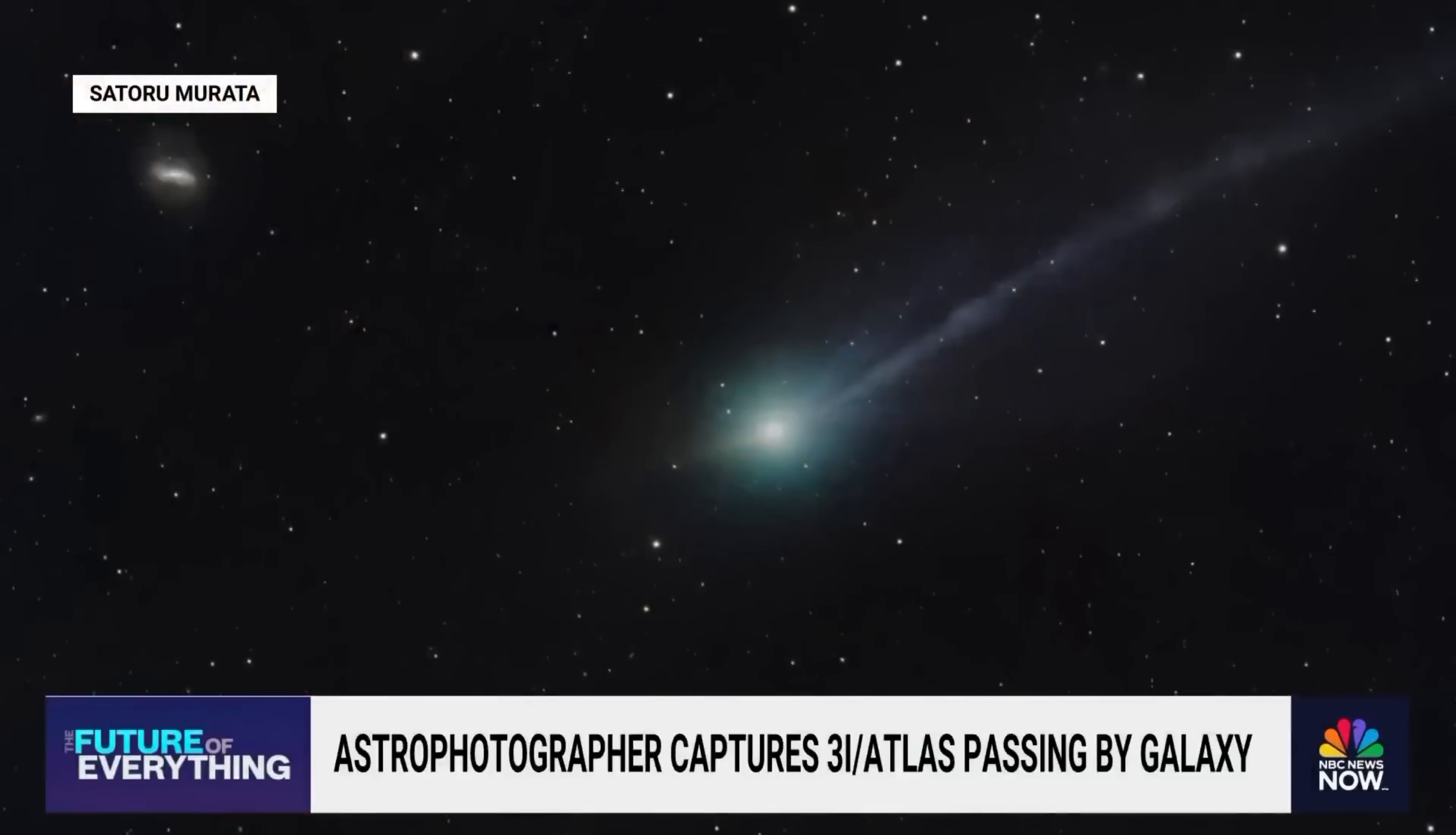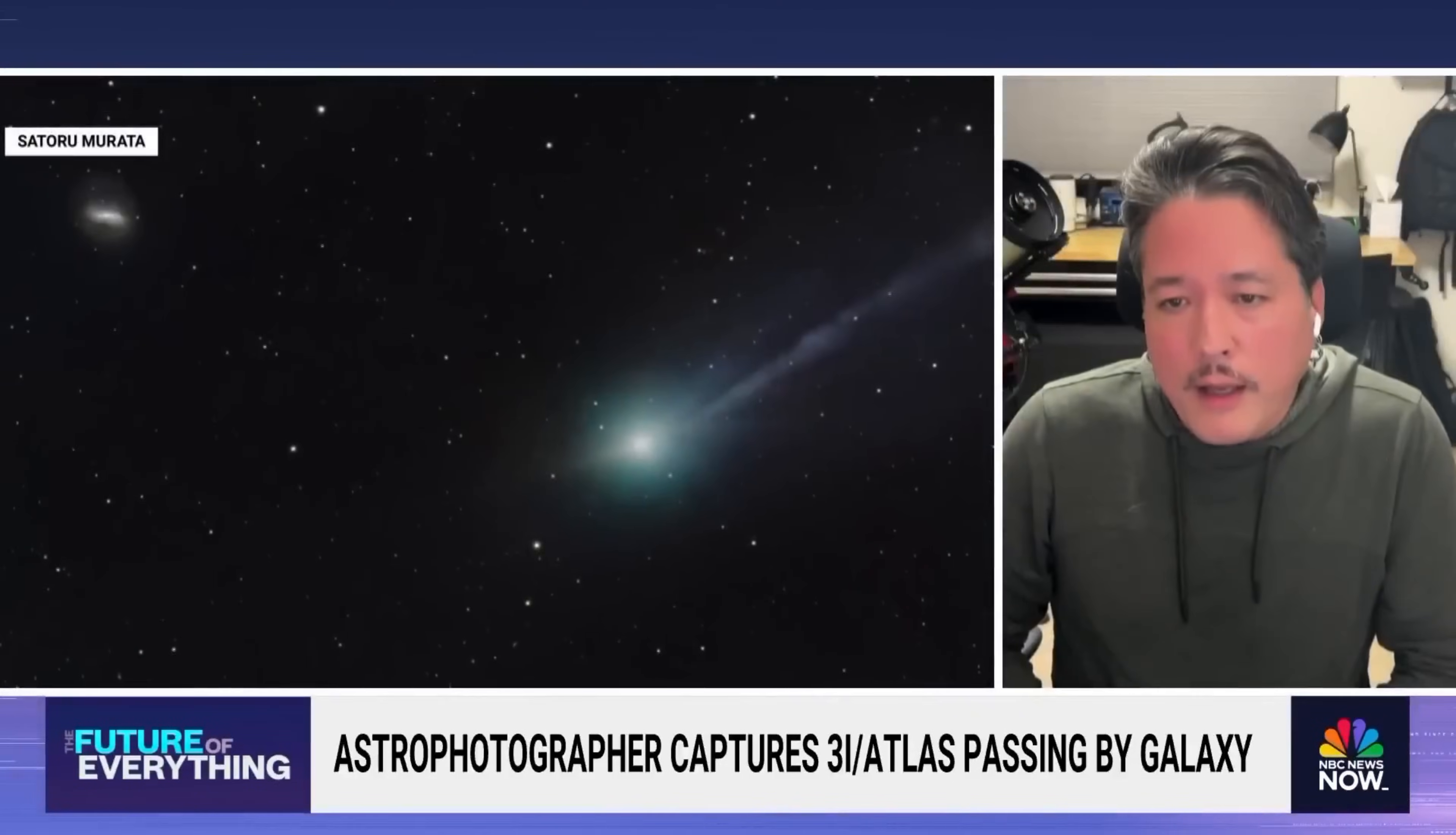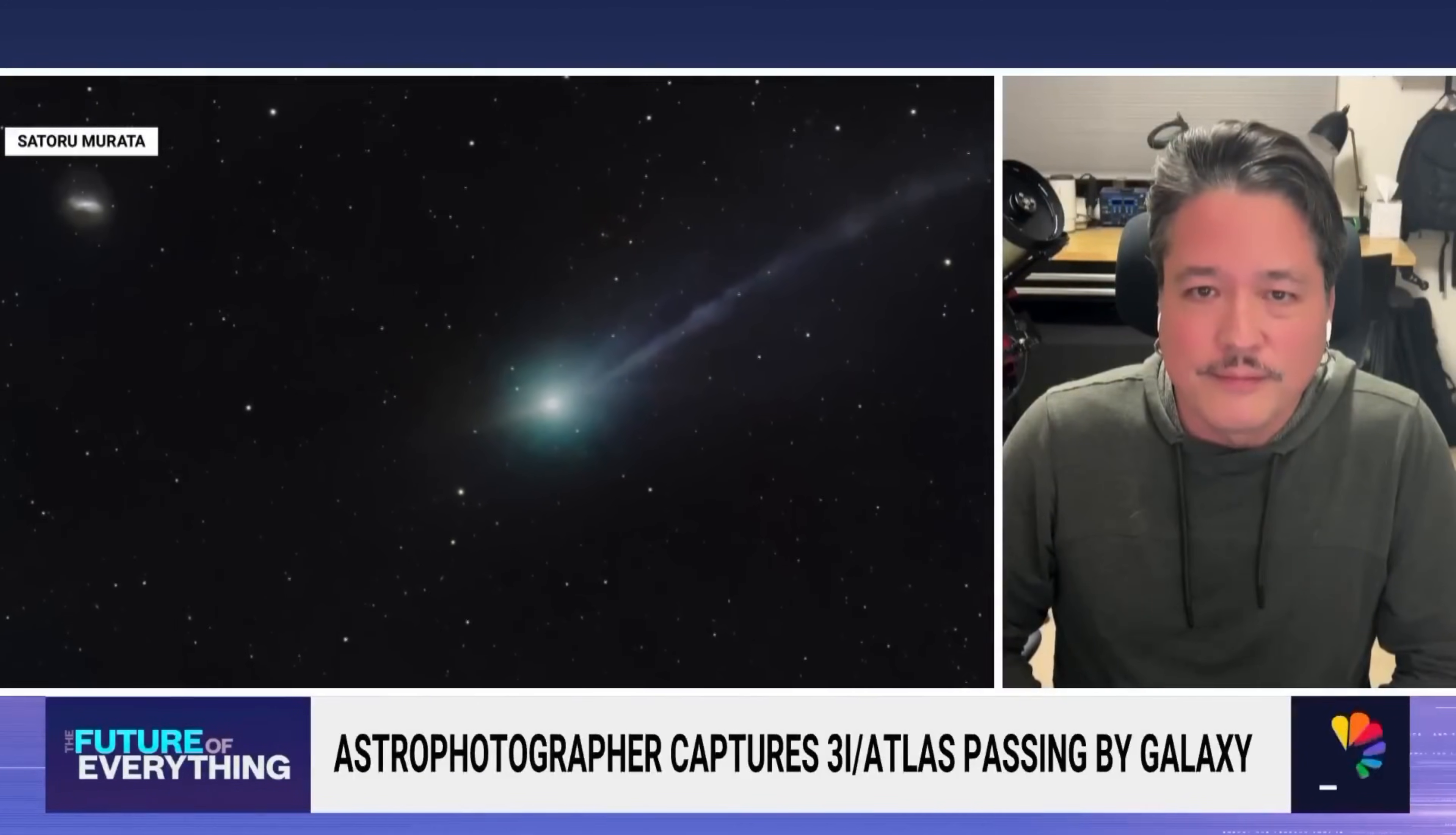The first anomaly that caught the attention of scientists was 3I Atlas's sunward jet. Unlike most comets, which emit jets of gas and dust in multiple directions as they approach the sun, 3I Atlas emitted a jet that was tightly focused toward the sun. Even more perplexing, the sunward jet continued to persist even after 3I Atlas passed its closest point to the sun, perihelion, when the sun's influence should have diminished.